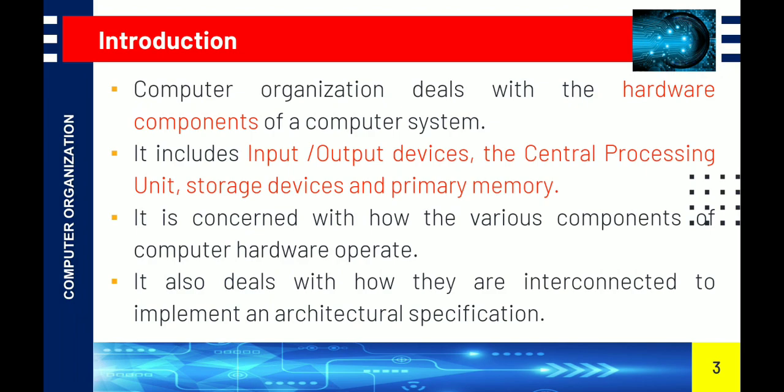Computer Organization deals with the hardware components of a computer system. Hardware components include input and output devices, the central processing unit, and storage devices — both primary memory and secondary storage devices like CD, DVD, hard disk, and pen drive.